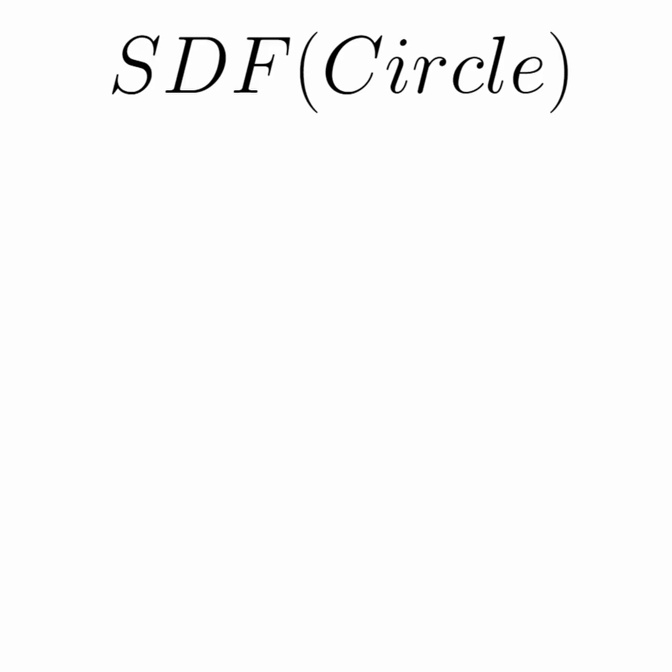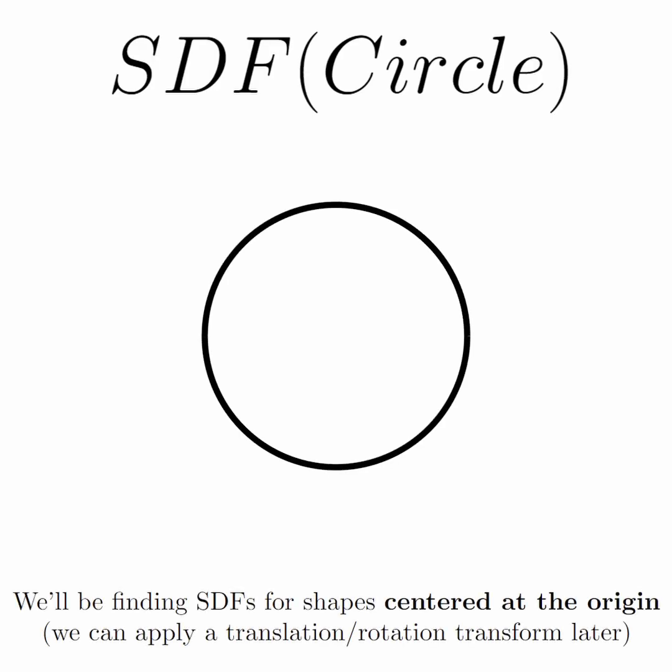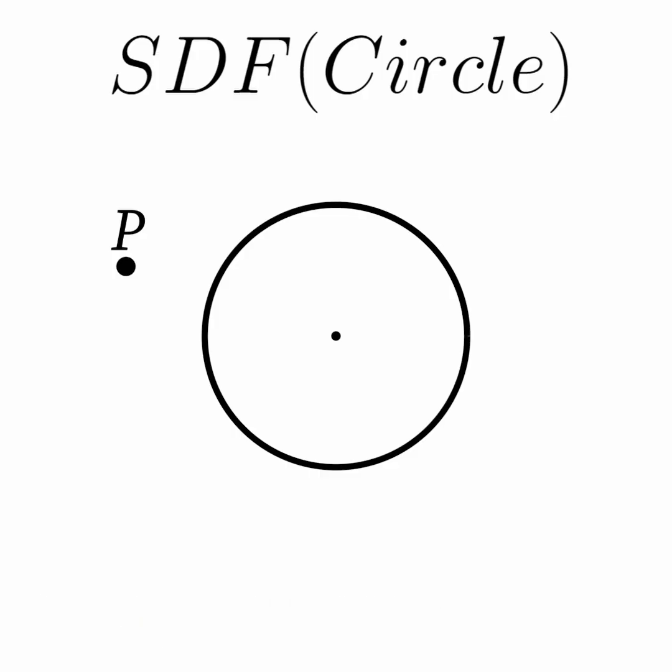Let's say you're looking for the SDF of a circle. Well, we know that if we have a point in space, the most direct way to go towards the circle, like the minimum distance, is kind of going towards the origin in this direction. And then the question is, what is the distance along that direction that we're going?